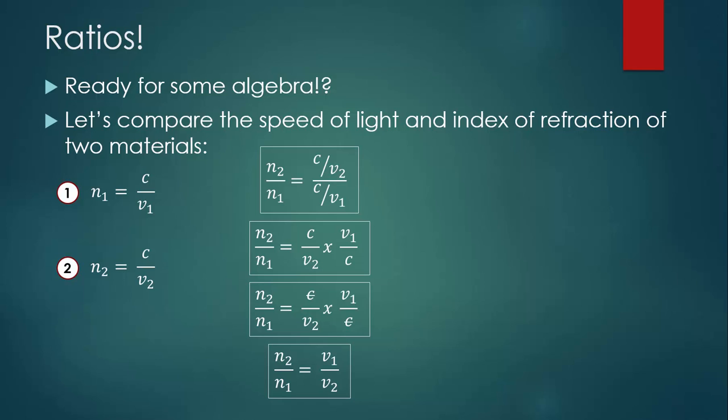We're not done yet, but let's take a look at that. Do you notice that the Ns are 2 over 1 and the Vs are 1 over 2? That's because there's an inverse relationship between the index of refraction and the speed of light in the material.